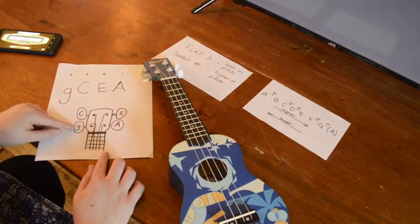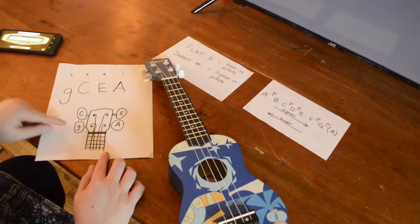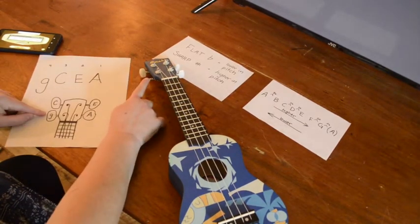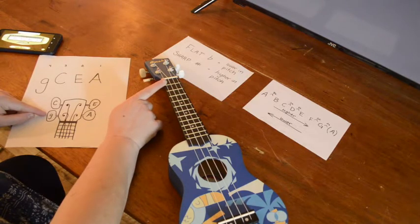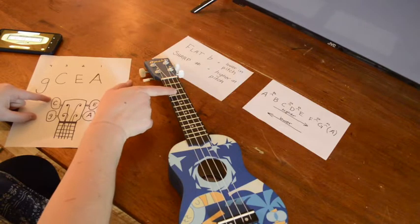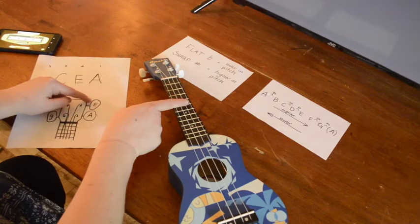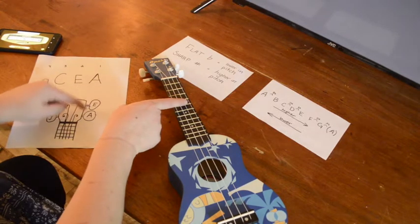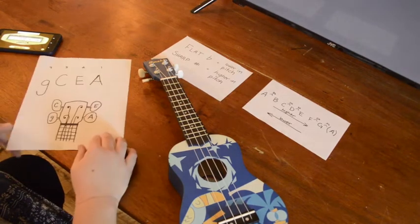And you can see here I've drawn out the tuning pegs. You need to twist this peg to tune this string to a G, this peg to tune this string to a C, this peg right here to tune that to an E, and this peg to tune it to an A. So that's what we're doing.